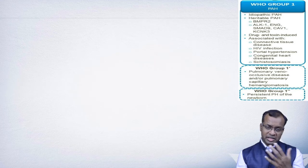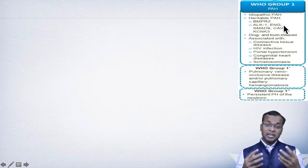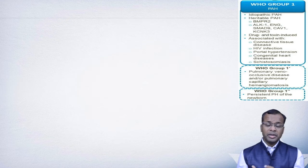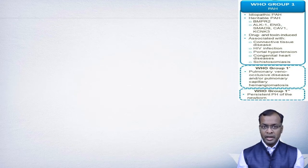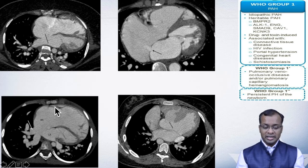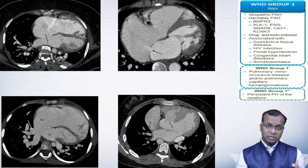Group 1 PH — idiopathic pulmonary hypertension — gets labelled very easily and very often, which I think is very wrong. We have seen many patients referred to us as idiopathic PH where imaging reveals an underlying cause. In Group 1, congenital heart diseases are first and important: patients may have a simple ASD, a PFO, or an anomalous pulmonary venous connection. These pathologies may not be easily picked up on echo, MRI, or other modalities, but anomalous pulmonary venous connections are very, very important findings on CT.